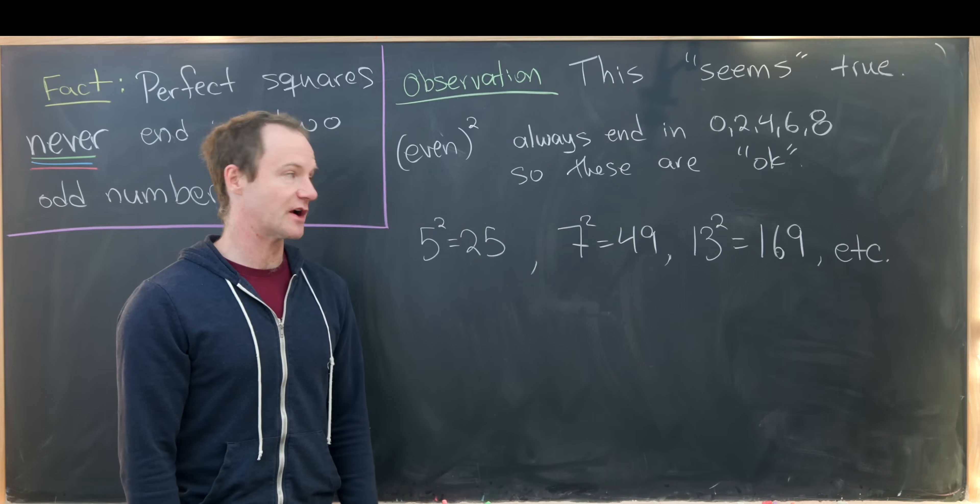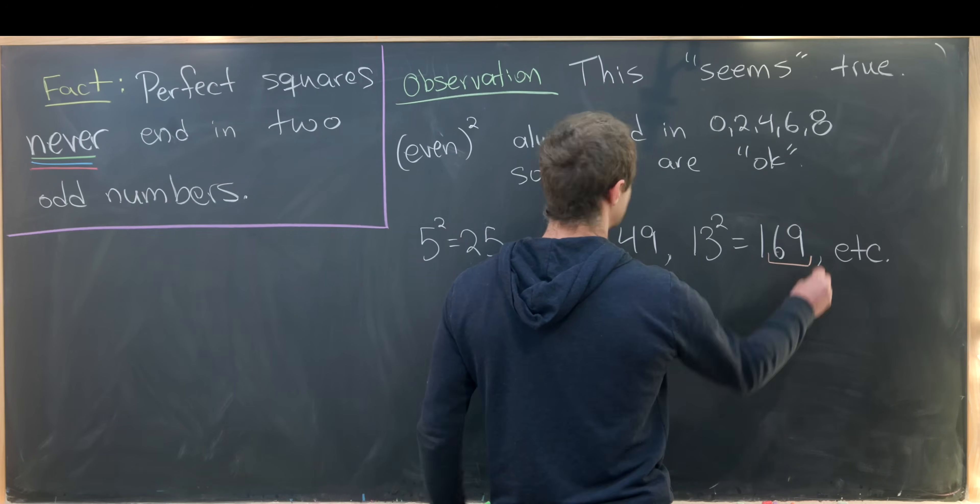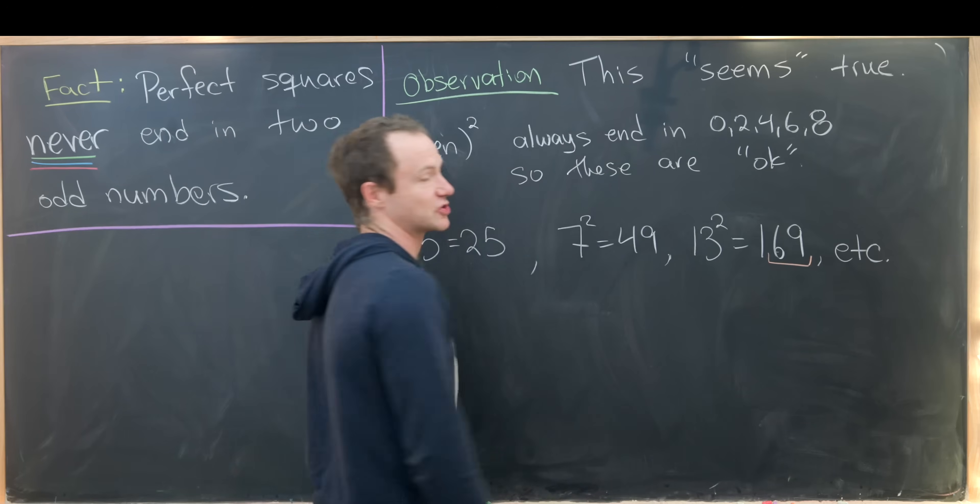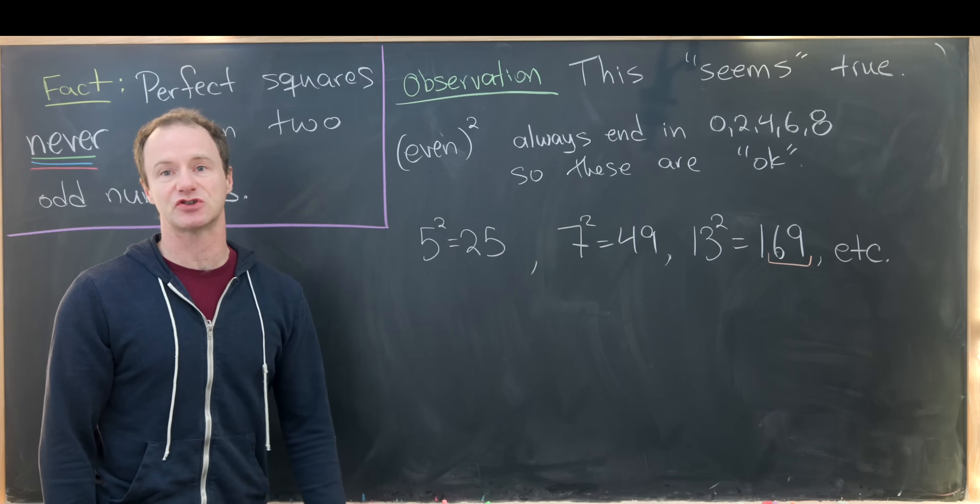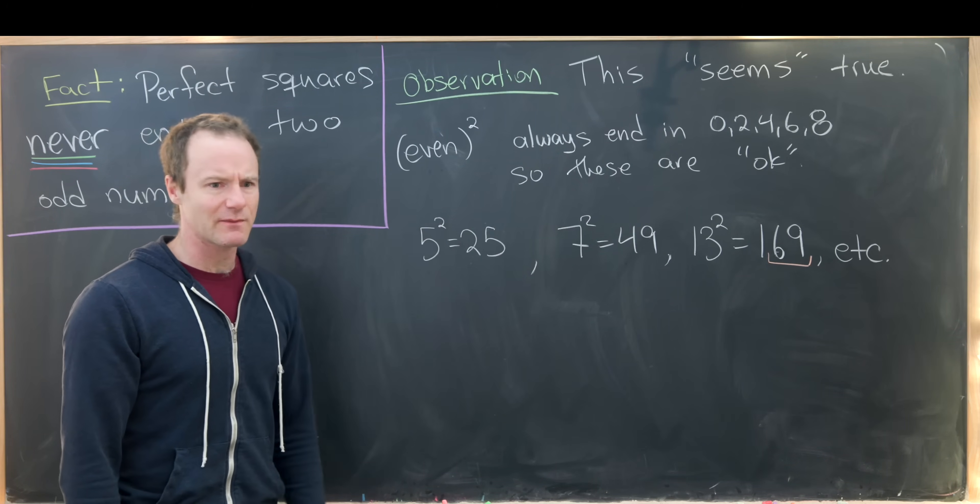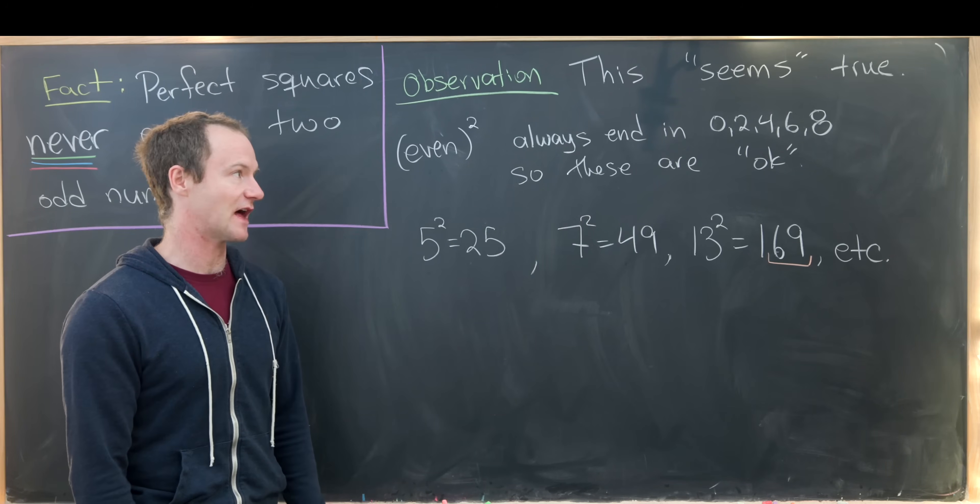13 squared is 169. But we only care about the last two digits based off of the fact that we're trying to prove. And that ends in an even number and then an odd number. So yeah, this seems to be true. So now let's clean up the board and see if we can get a precise reason why that is true.